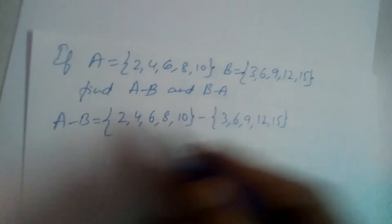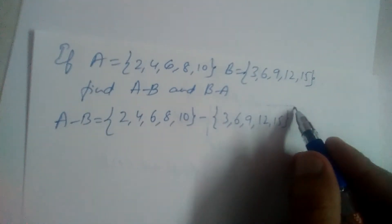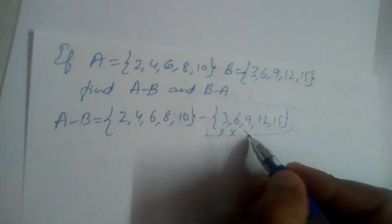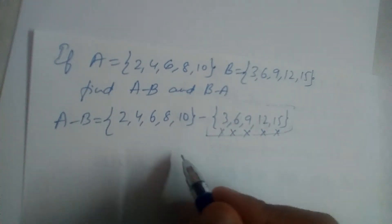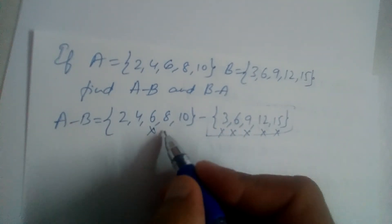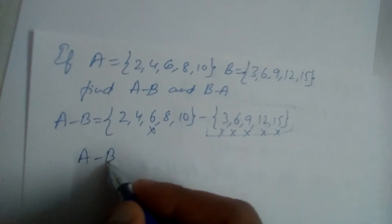9, 12, 15. A minus B means the elements that are present in B should not be written. 3, 6, 9, 12, 15 we should not write. So do we have anything here? 6 is here, right? 6, only one element is common, so we should not write that.